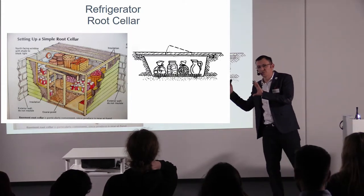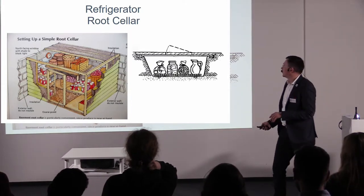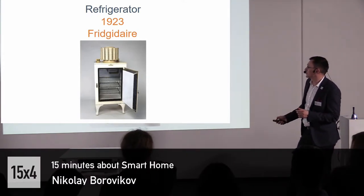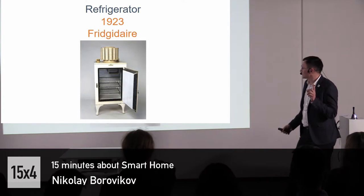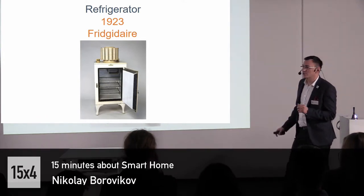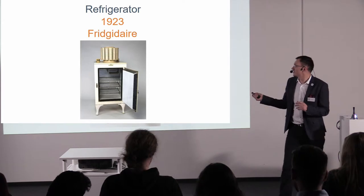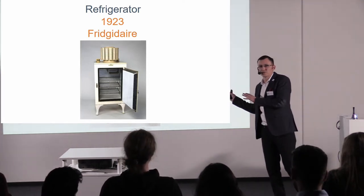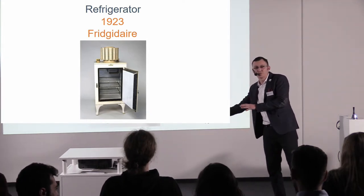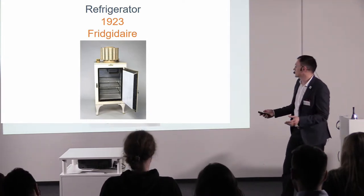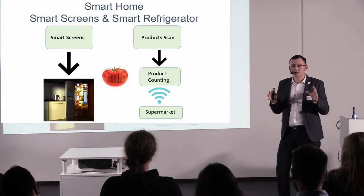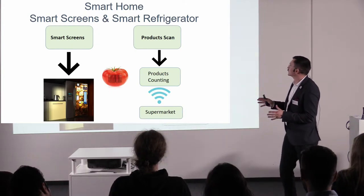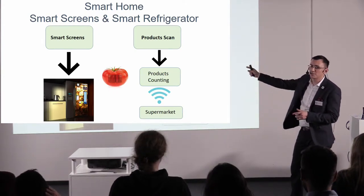So the root cellar was like a first step toward a refrigerator. When electricity became available, the first electric refrigerator was created in 1923 by a refrigerator company. You can see that we no longer need a root cellar outside our home — it will be inside, and we don't need to go outside. Let's speak about the smart refrigerator. It actually has two parts: smart screens and smart refrigerator functionality.